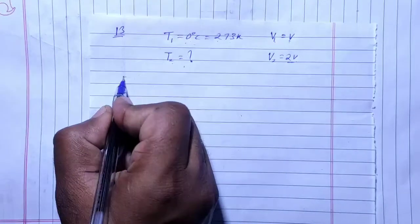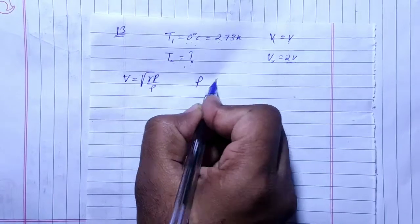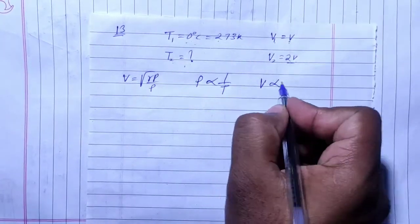The velocity is equal to gamma P upon rho. Density and temperature will be inversely proportional, and the velocity and temperature will be directly proportional to the root.